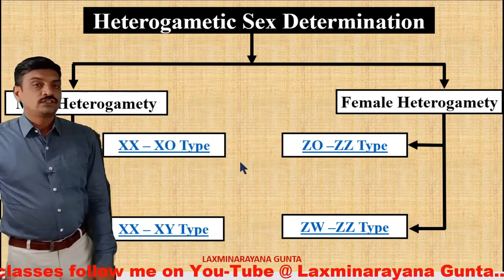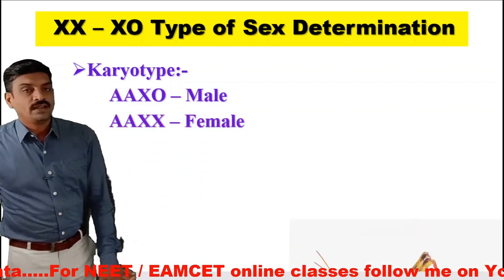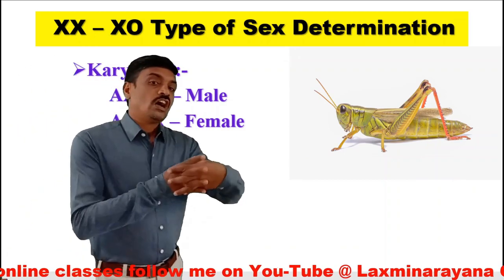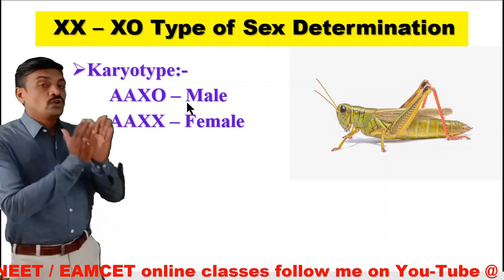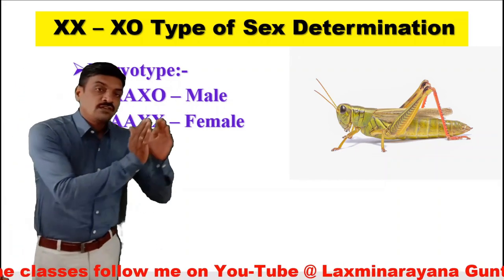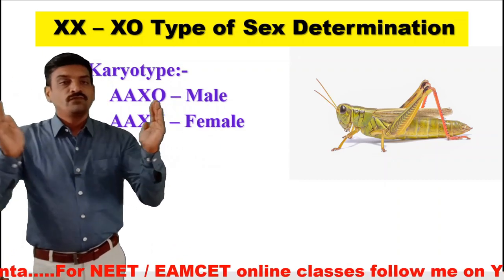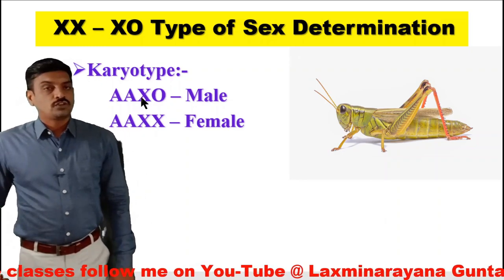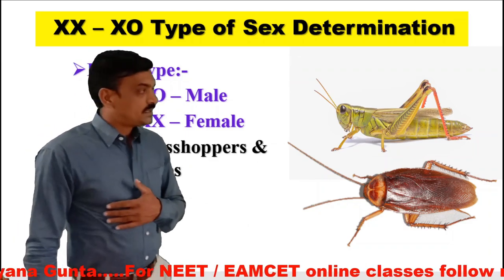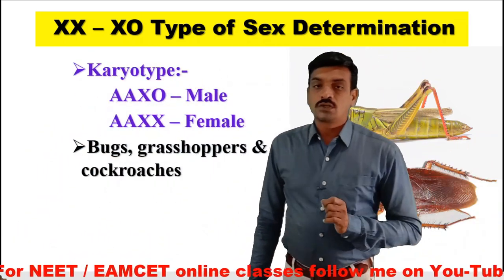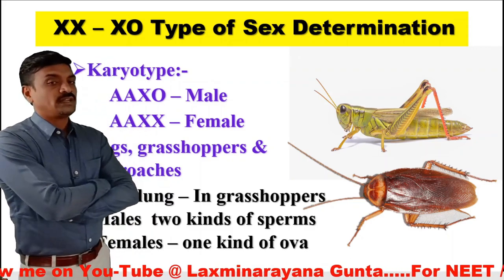In the XX/X0 type of sex determination, the karyotype is AA X0 for male and AA XX for female. The karyotype is the picture of chromosomes of an individual. Here AA means one set of autosomes from one parent and another set from the other parent. X0 means one sex chromosome is X and the other is absent — that is male. AA XX is female. This type of sex determination is observed in bugs, grasshoppers, and cockroaches. McClung, for the first time, observed this type of sex determination in grasshoppers.